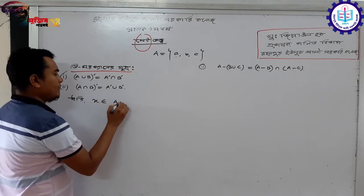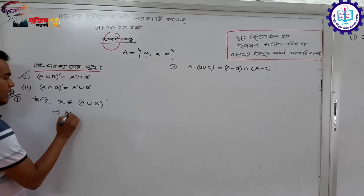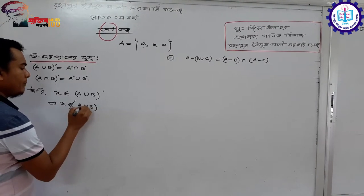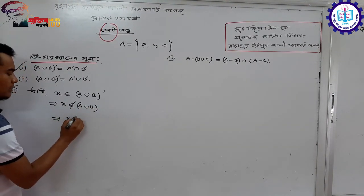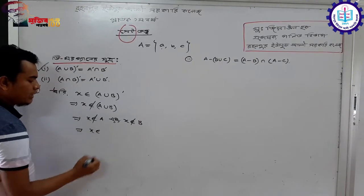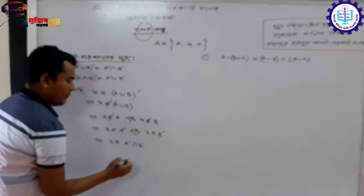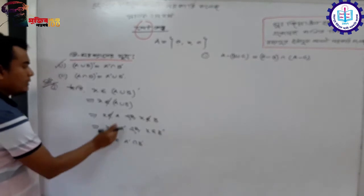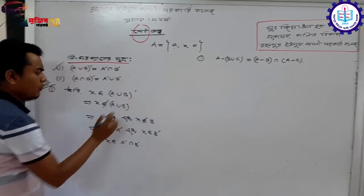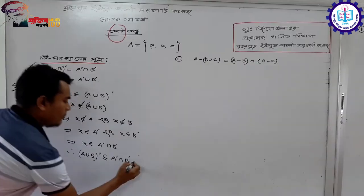Suppose x belongs to complement of (A∪B). From this we can link that x not belongs to (A∪B), which implies x not belongs to A and x not belongs to B. So balancing both sides, for the element x, overall x belongs to the complement of A and complement of B. So if x belongs to complement of (A∪B), then complement of (A∪B) is a subset of complement of (A∩B). Equation number one.